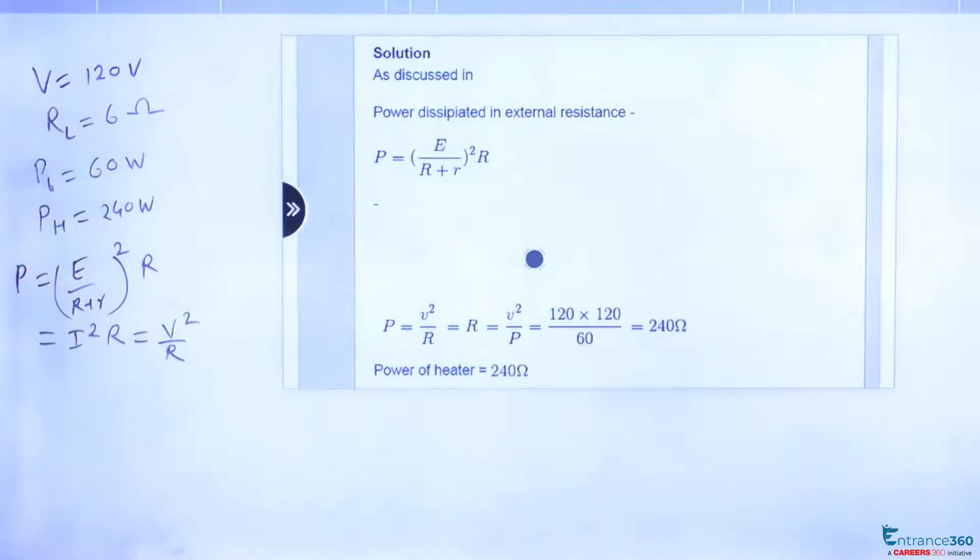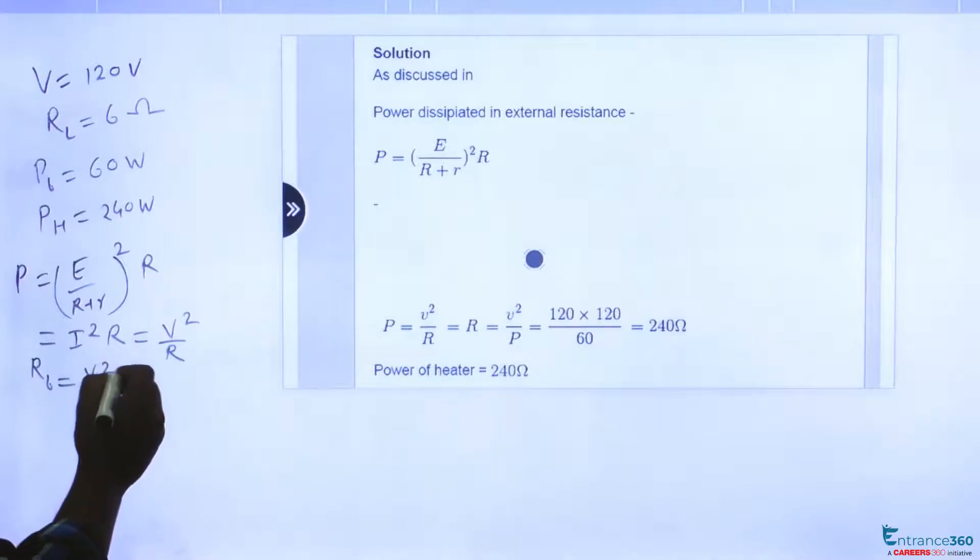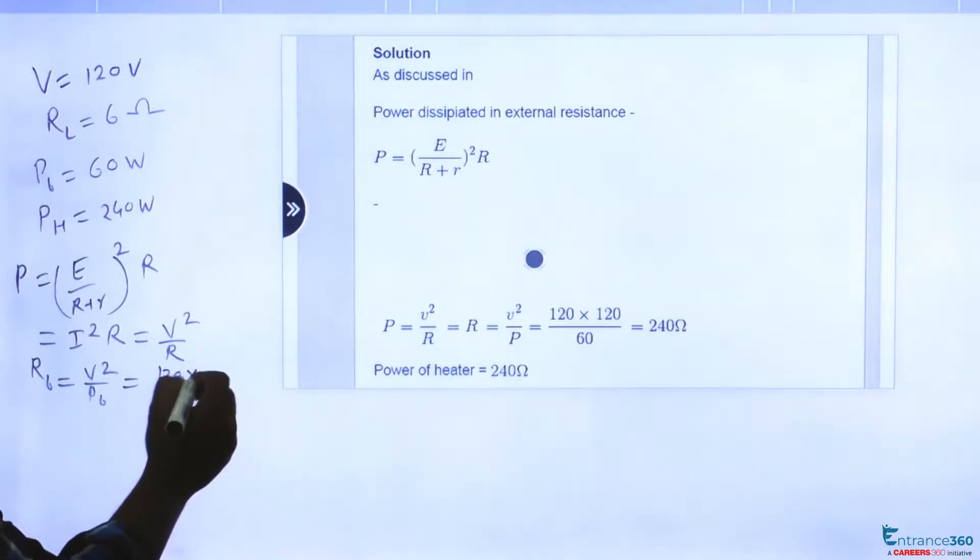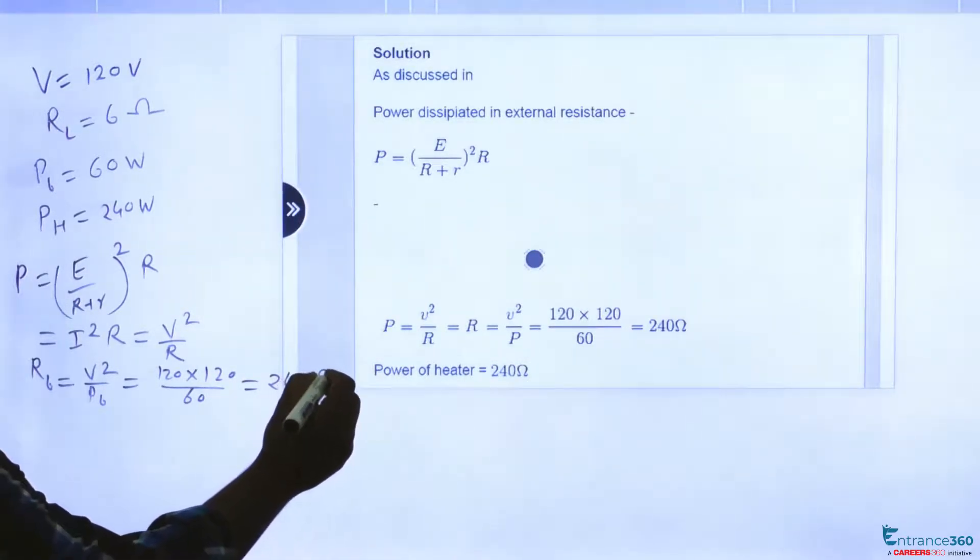We have given power of bulb and power of heater, then we will find out corresponding resistance of bulb and heater. So resistance of bulb can be given as V squared by power of bulb, which is 120 into 120 upon 60, will give 240 ohm.